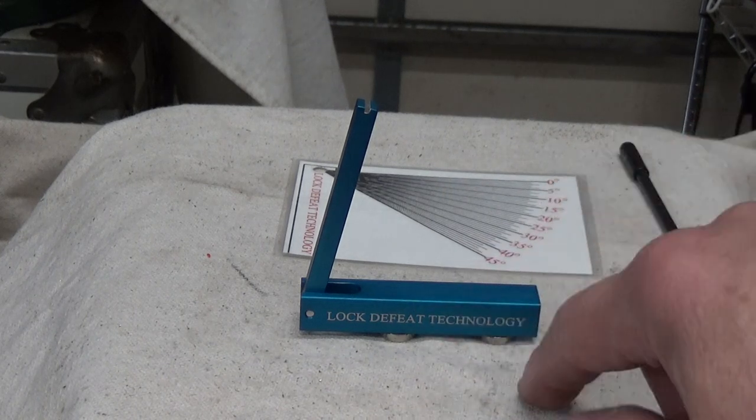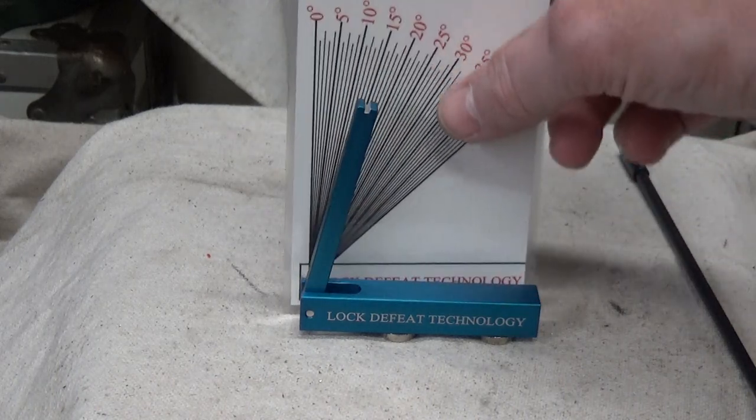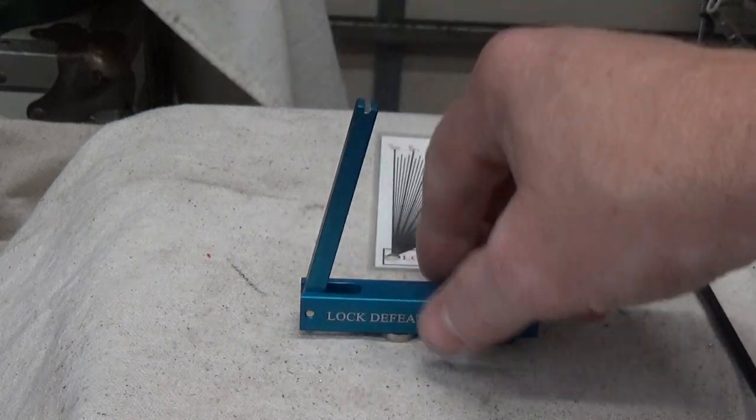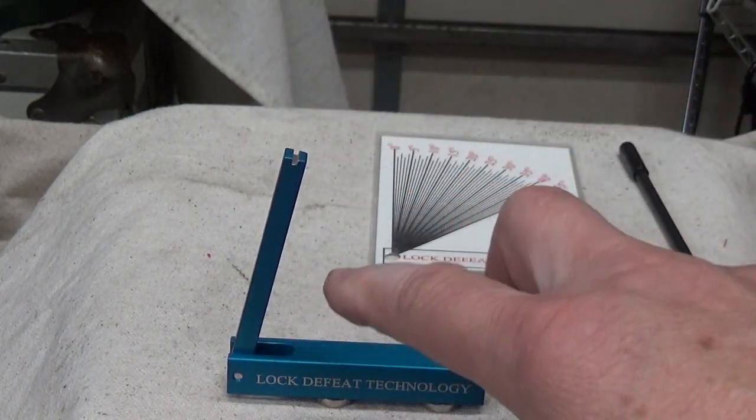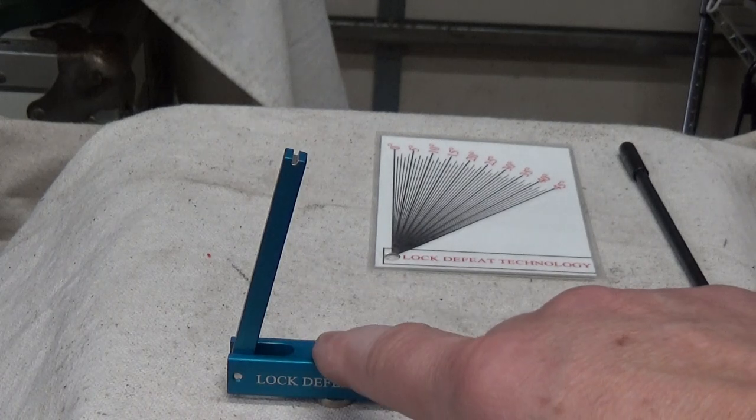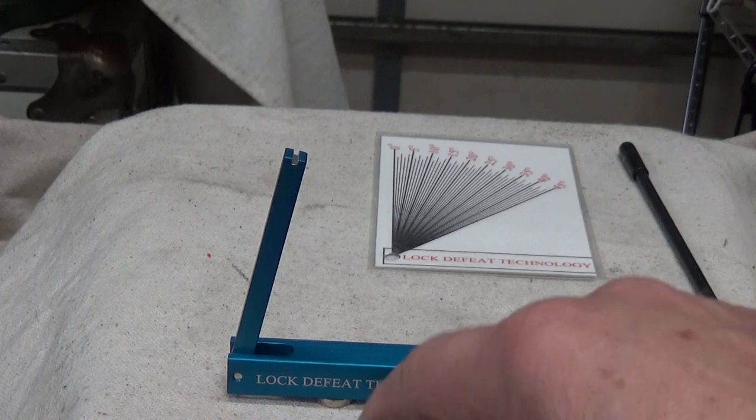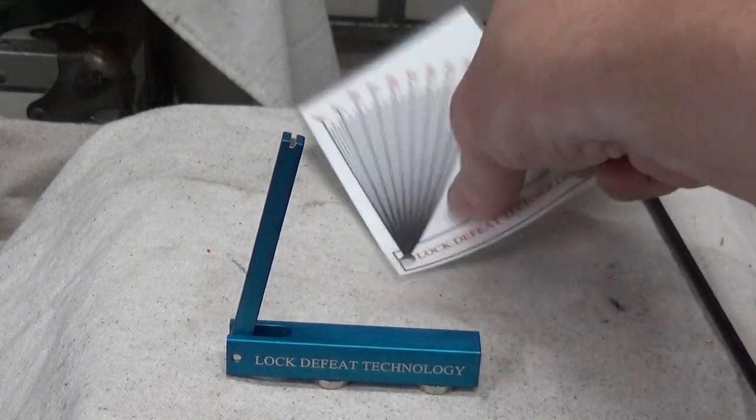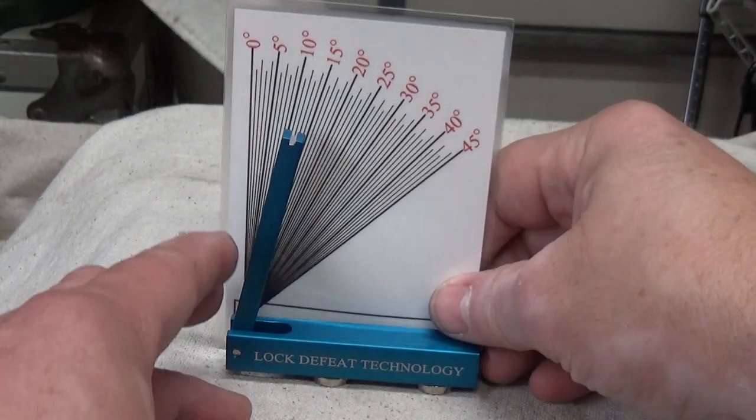So this is the Lock Defeat angle guide. The angle guide is used, basically, you would set the lock. Set this on the face of the door. It's magnetic, just like the other one. But you're going to be using that to gain entry into the lock case by guessing how thick the door is, where your target is you need to drill into, and then you're going to use this to set up the angle. So you could set it from zero all the way up to a 45 degree angle.